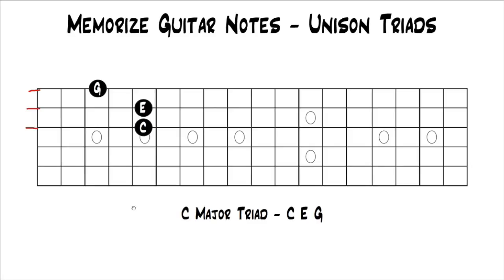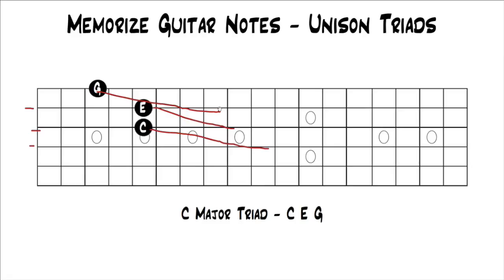We're going to start with the same C major triad on the first, second, and third strings. Now, instead of moving the highest note to the lowest note to get a different inversion, we're just going to move this whole chord — every single note to a unison note — on the next set of strings: the second, third, and fourth strings. So your C moves to a unison, your E moves to a unison, and your G moves to a unison.